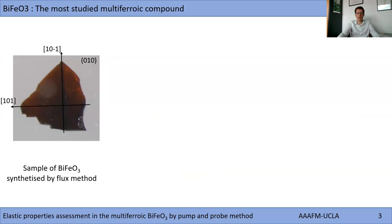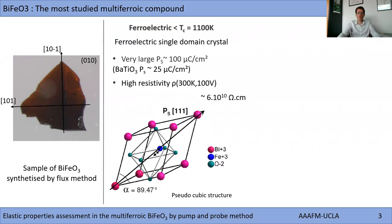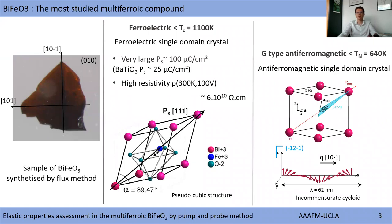In this study, we have worked on single crystals of one of the most known multiferroics: bismuth ferrite. The single crystals are synthesized by flux method at CEA Saclay by Dorothée Colson. Bismuth ferrite is ferroelectric below 1100 K with a huge polarization of 100 microcoulomb per centimeter squared along the 111 direction of the pseudo-cubic structure. It presents also a high resistivity. BFO is also antiferromagnetic below 640 K, and due to the Dzyaloshinskii-Moriya interaction, the spins form a cycloid in the 110 plane.